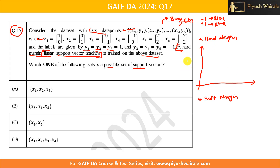Let's say we have two classes: minus 1, indicated by black, and plus 1, indicated by blue. Out of 6 data points, 3 belong to the minus 1 class and 3 belong to the plus 1 class. I'm going to plot three black data points and three blue data points accordingly.